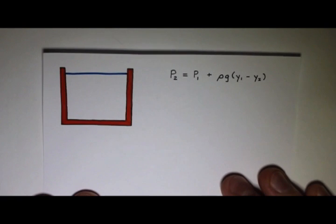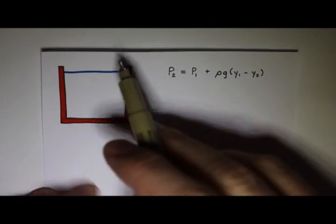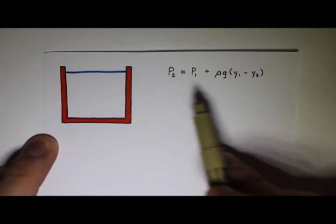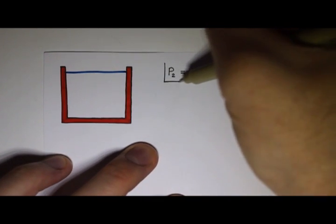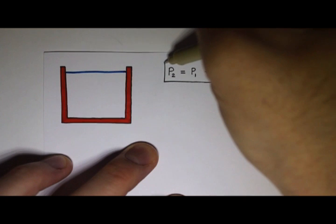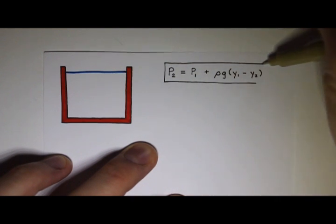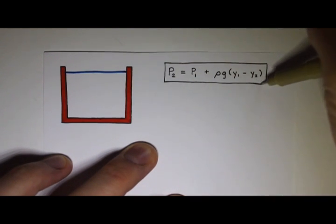So suppose I have a container of water, and it's just sitting here. I saw last time that the pressure at two different depths, p1 and p2, is related by this equation.